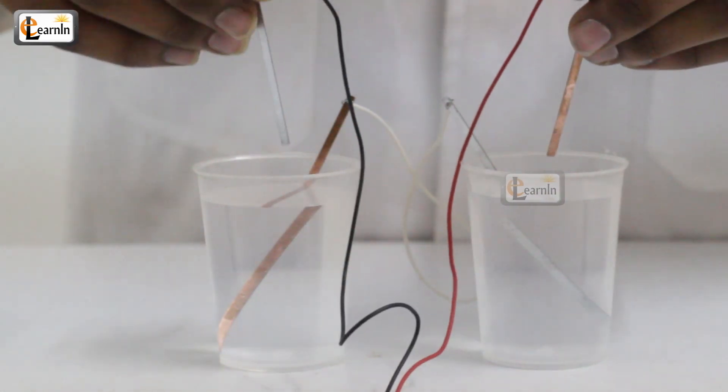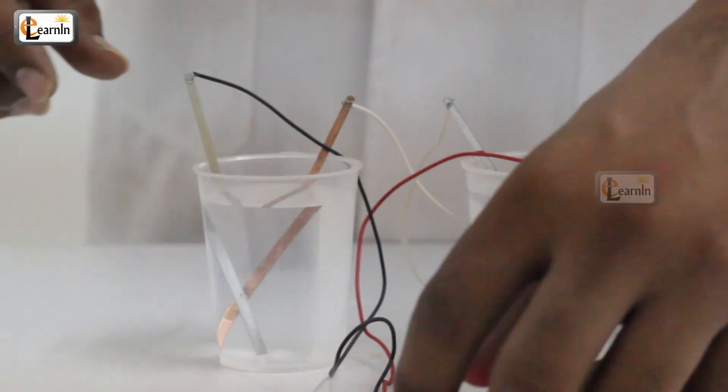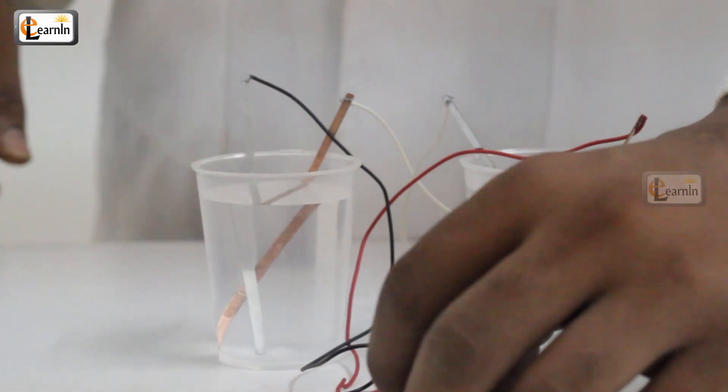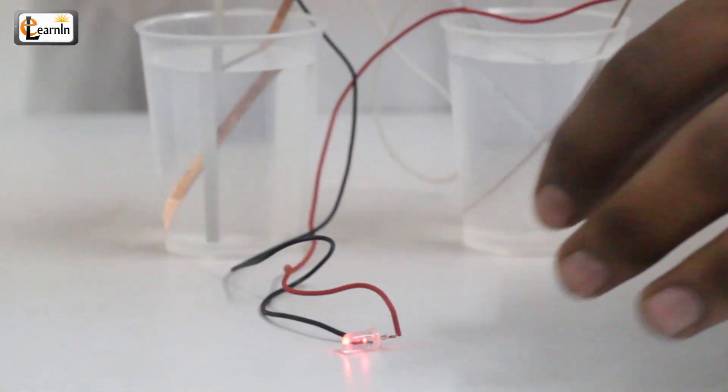Now put the copper strip which is connected to the LED in the glass which has the zinc strip, and the LED-connected zinc strip in the copper-containing glass. You'll observe that the LED light starts glowing.